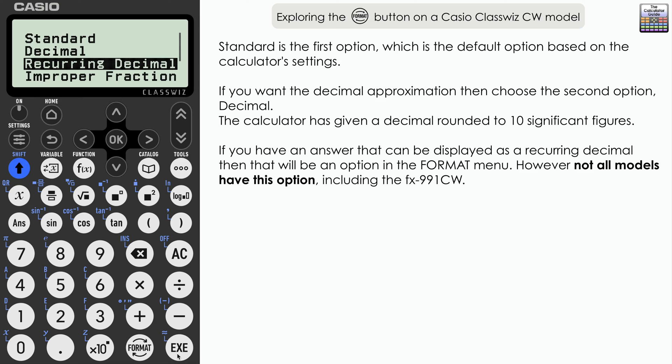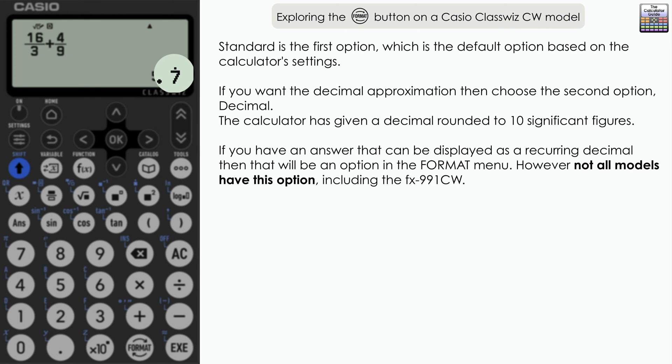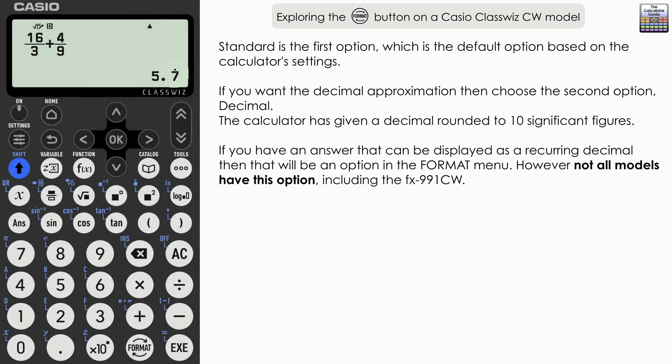So let's select that one. And you can see here, it's 5.7 recurring, we can see the little dot above the seven indicating that that seven is going to recur. Depending on which country you're in or what model of calculator you have, that might display as a line maybe instead. So comment below if yours displays slightly differently.